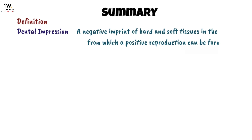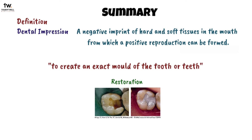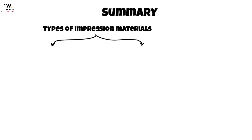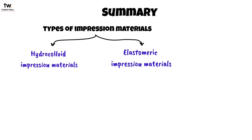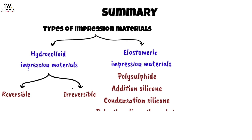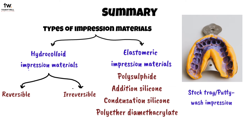That's it for this video. Let's do a quick recap. A dental impression is a negative imprint of hard and soft tissues in the mouth from which a positive reproduction, cast, or model can be formed. The purpose is to create an exact mold for restorations, orthodontic appliances, or prosthodontic treatment. Impression materials include hydrocolloid — irreversible and reversible — and elastomeric materials: polysulfide, addition silicone, condensation silicone, and polyether dimethacrylate. The different impression techniques in fixed partial dentures are stock tray putty wash impressions, custom tray, dual arch/triple tray, segmental, and post-space impression techniques.